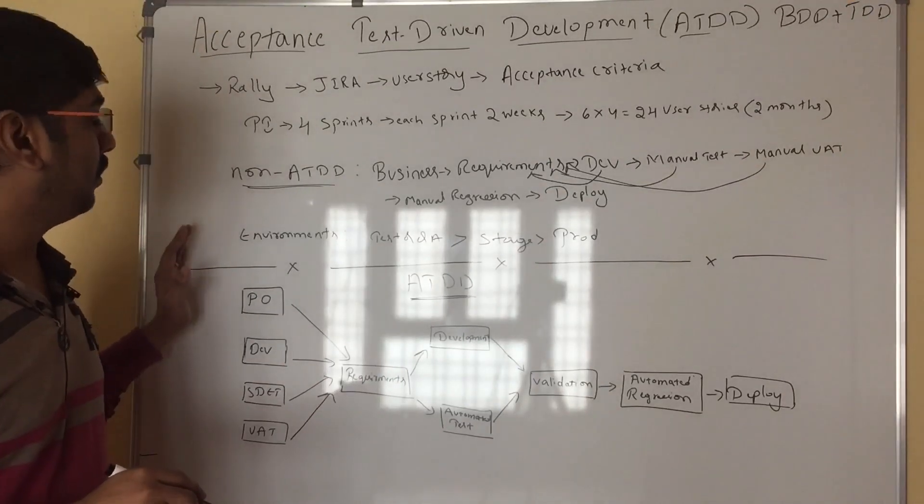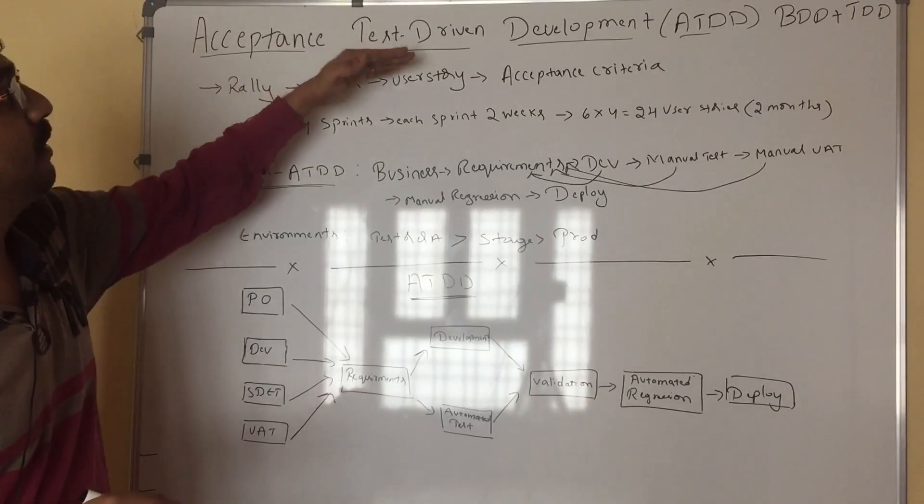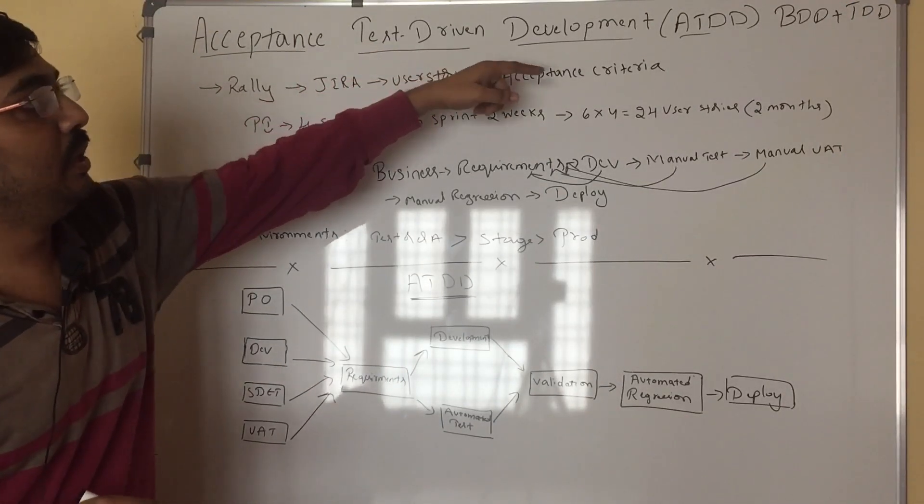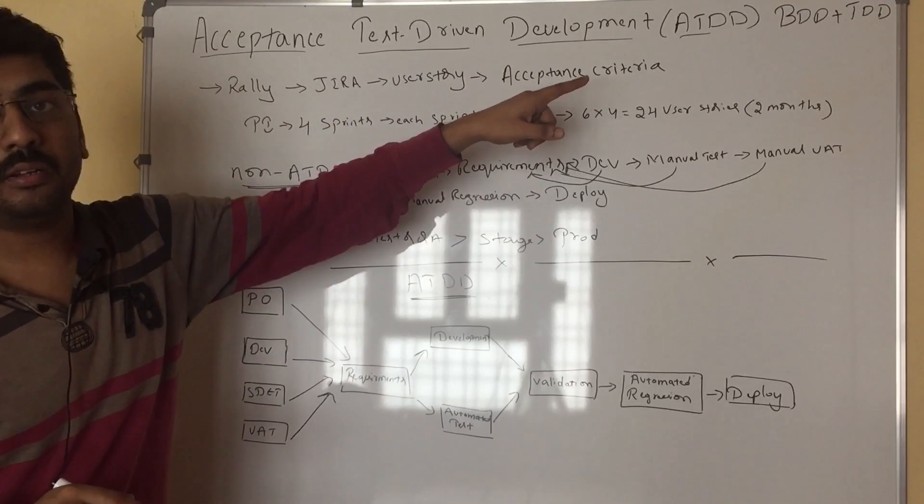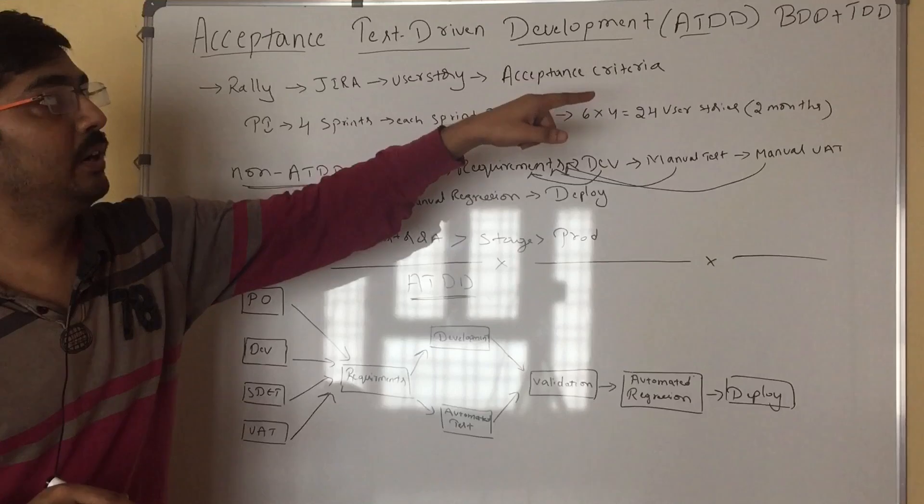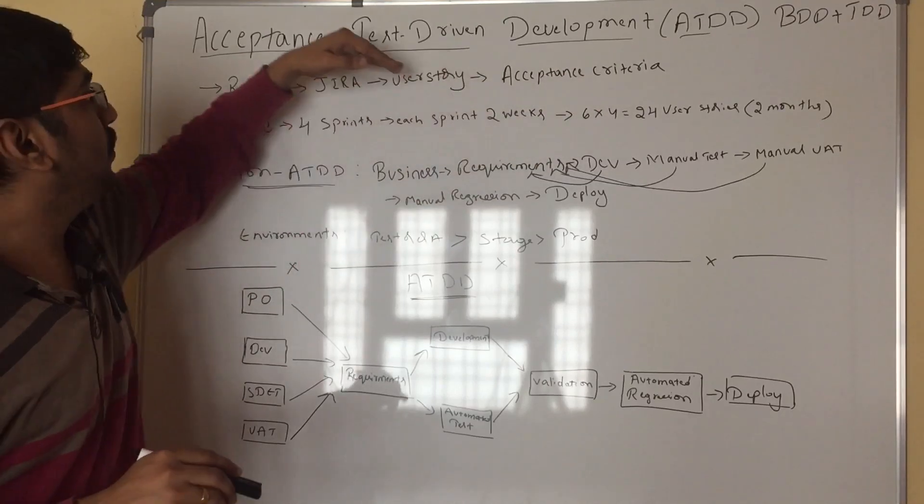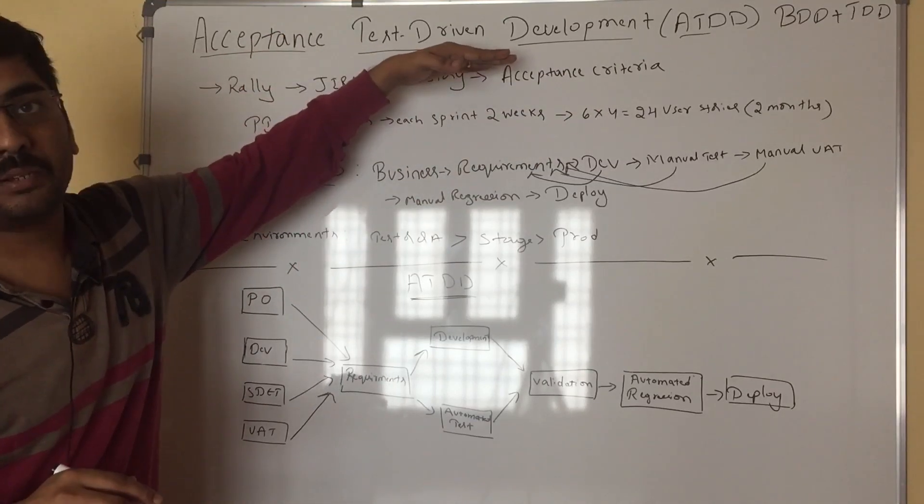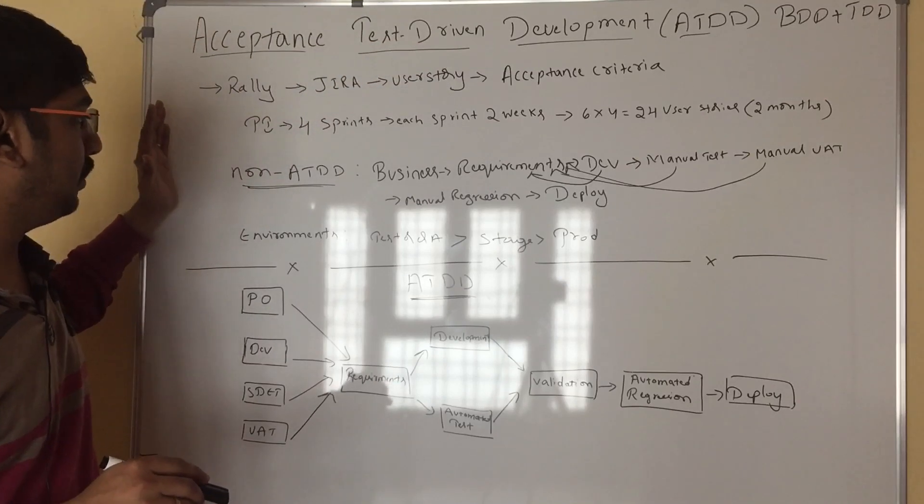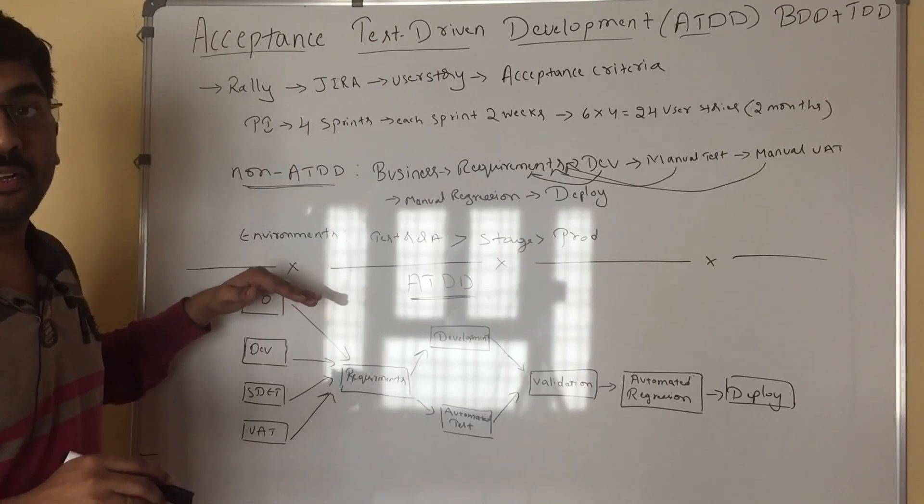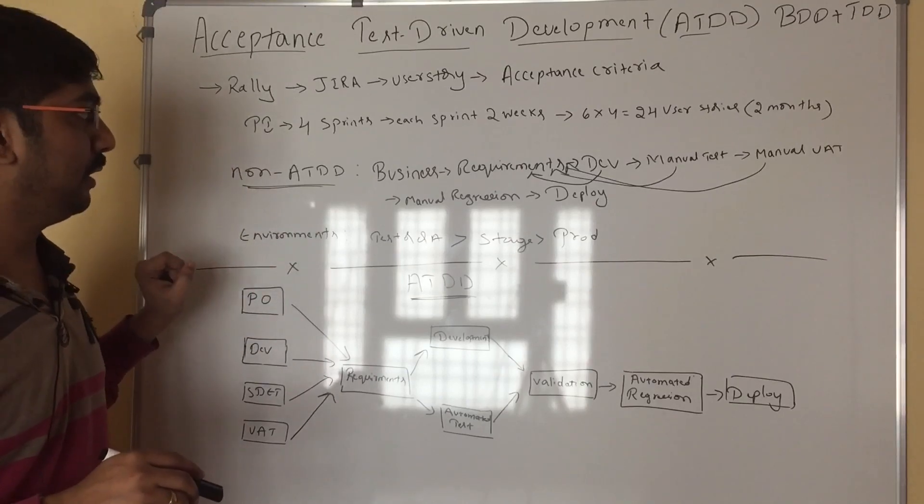This is acceptance test-driven development. We have BDD and TDD. It's a combination of BDD, behavior-driven development, and TDD. This automation, I will be explaining in upcoming videos. The high level, what is the use of this ATDD? I am giving the overview of this one.